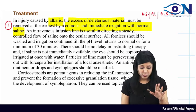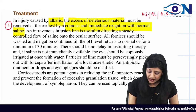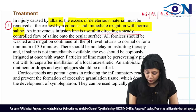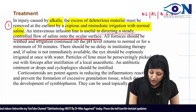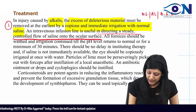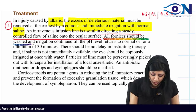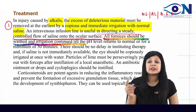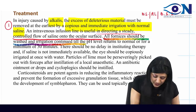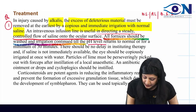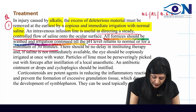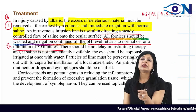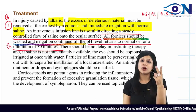All fornices must be washed thoroughly. An intravenous infusion line is useful for directing a steady controlled flow of saline onto the ocular surface. Irrigation must be continued until the pH returns to normal or for a minimum of 30 minutes.